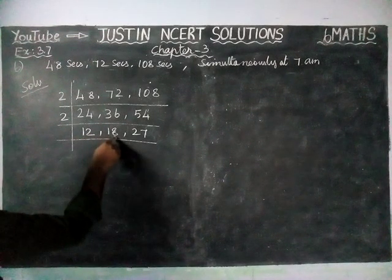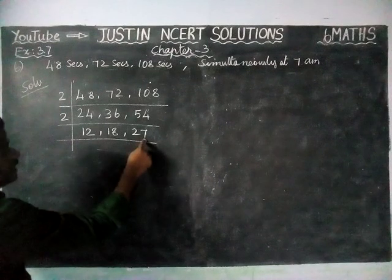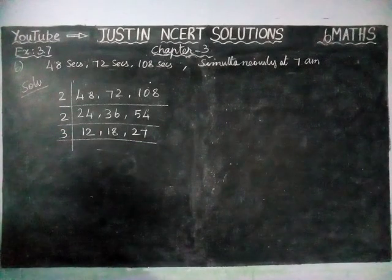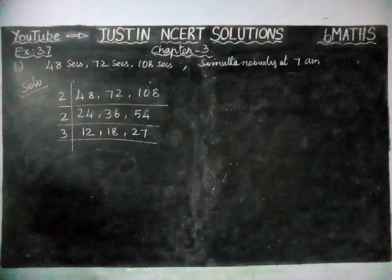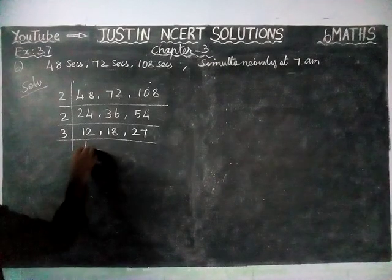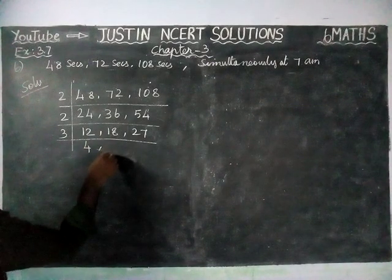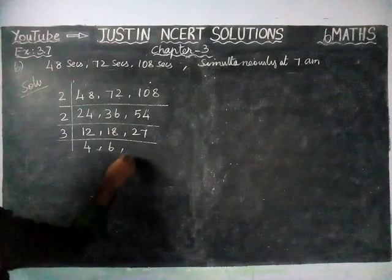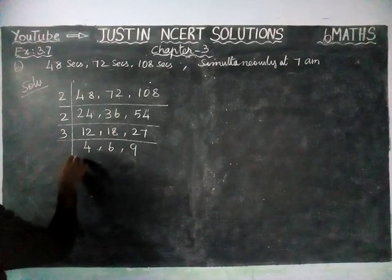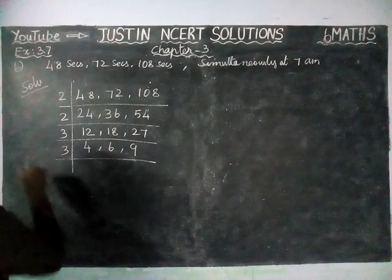Now we are going to divide by 3. 4 threes are 12, 6 threes are 18, 9 threes are 27. Now we are going to divide by 3 again.